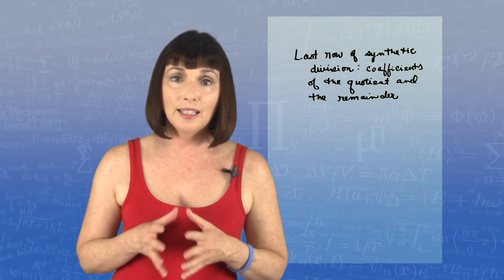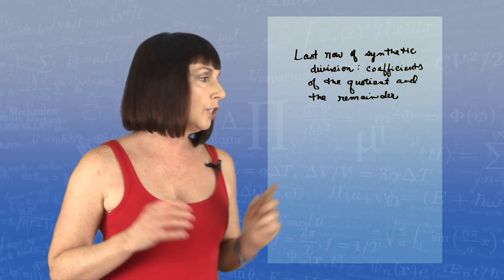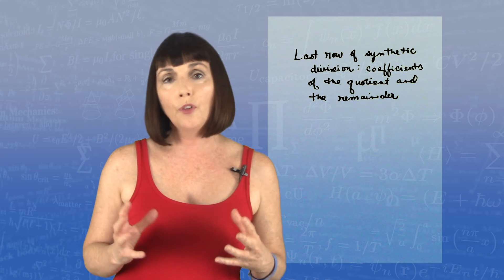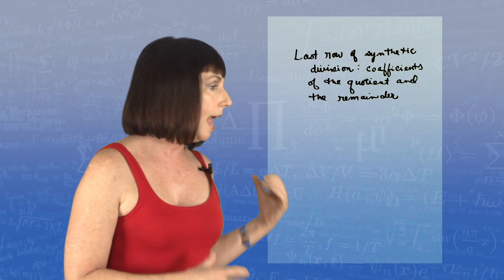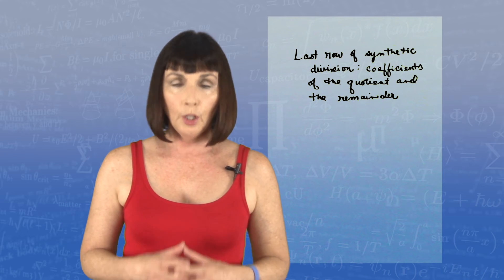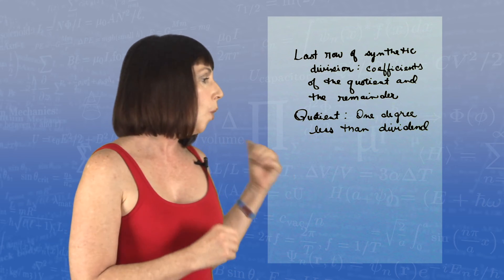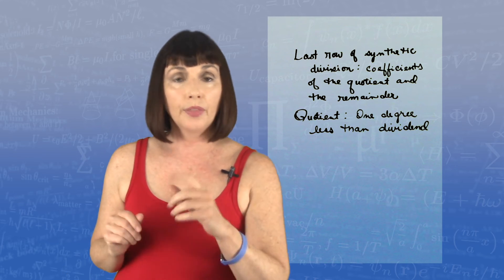Now in synthetic division, the last row gives you the coefficients of the quotient and the remainder. The quotient is one degree less than the dividend.